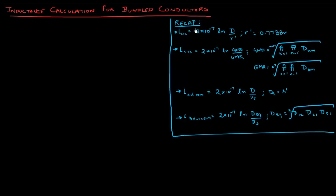So a quick recap here of everything we've seen so far with reference to inductance. We started off with formulating the inductance of a solid conductor just by itself, and we got this equation: 2×10^-7 ln(d/r') where r' was 0.7788 times r, and this we saw was compensating for the inductance due to internal flux.